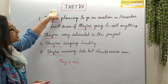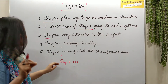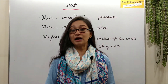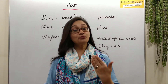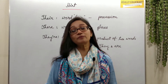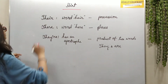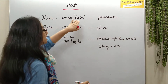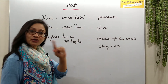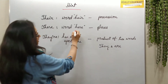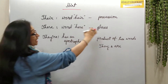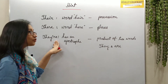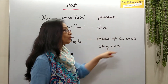If you find yourself unsure which word to use, you can take a hint from the spelling. T-H-E-R-E contains the word 'here', which indicates position or place. T-H-E-Y-apostrophe-R-E has an apostrophe, which is the product of combining two words: 'they' and 'are'.